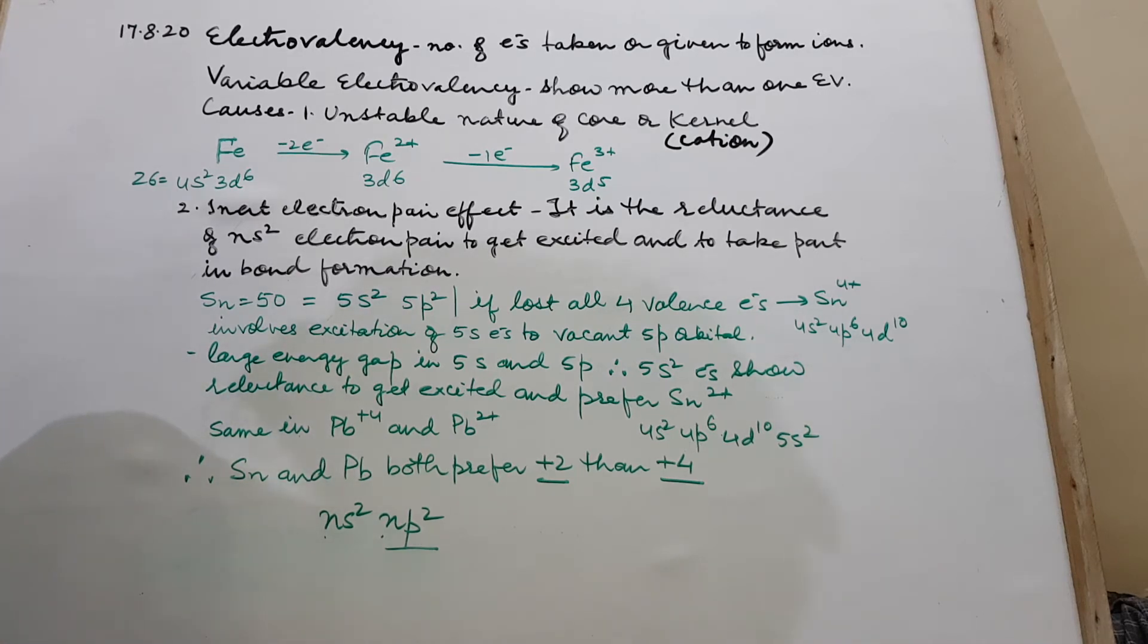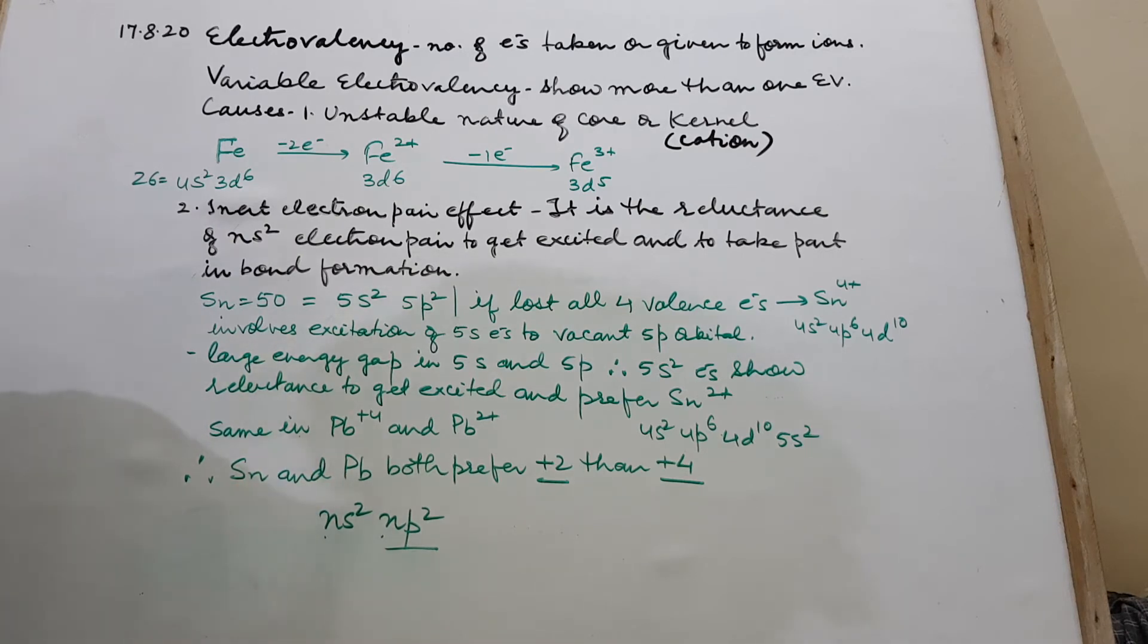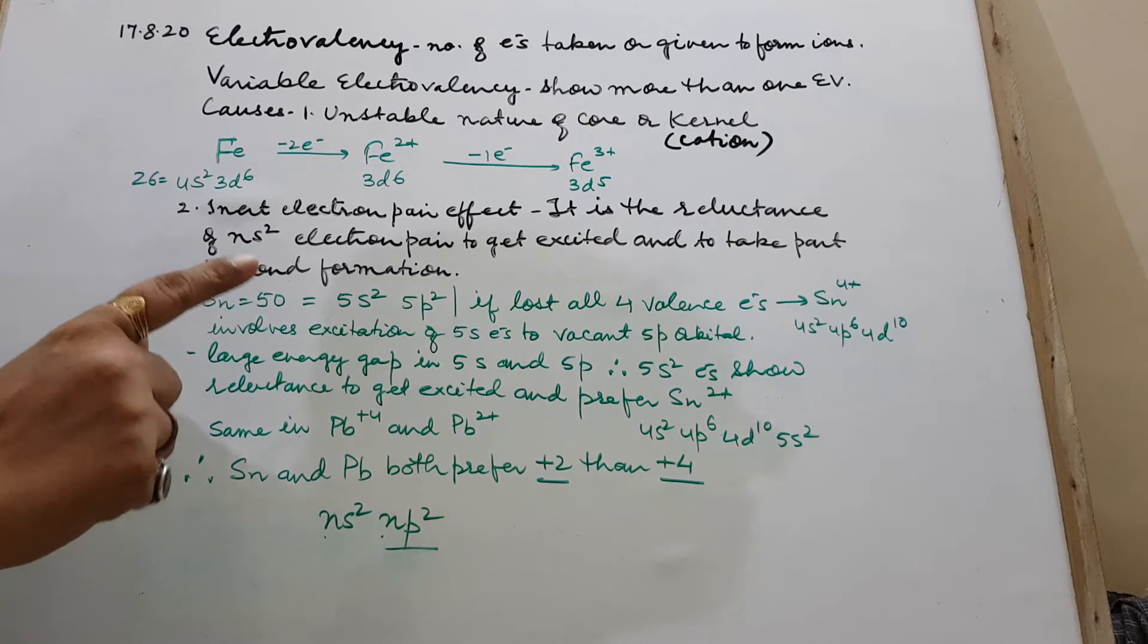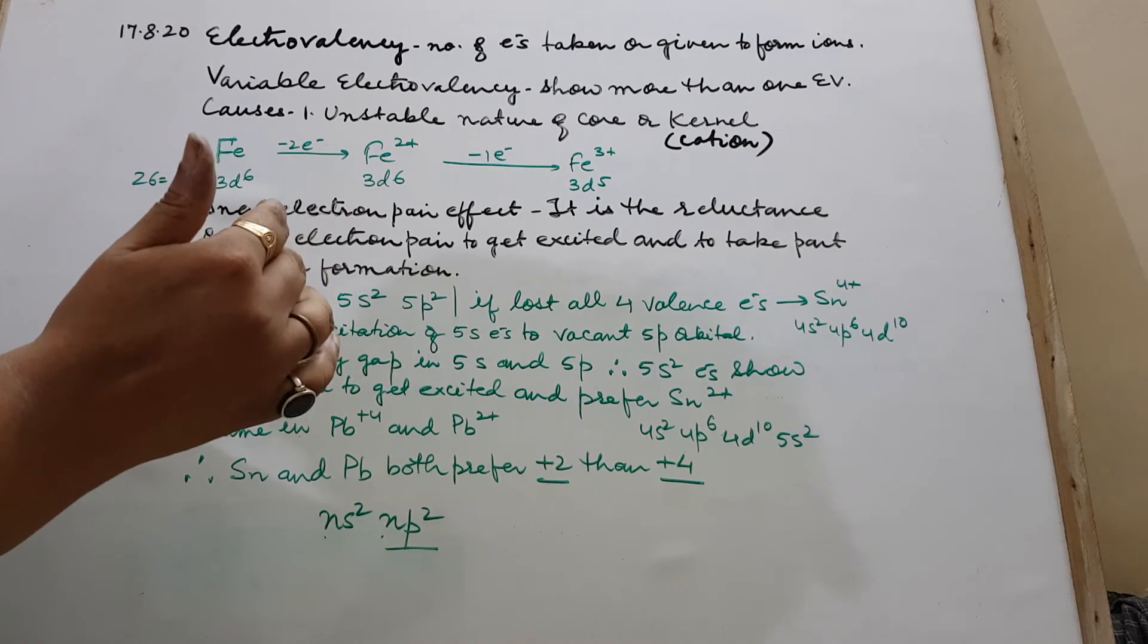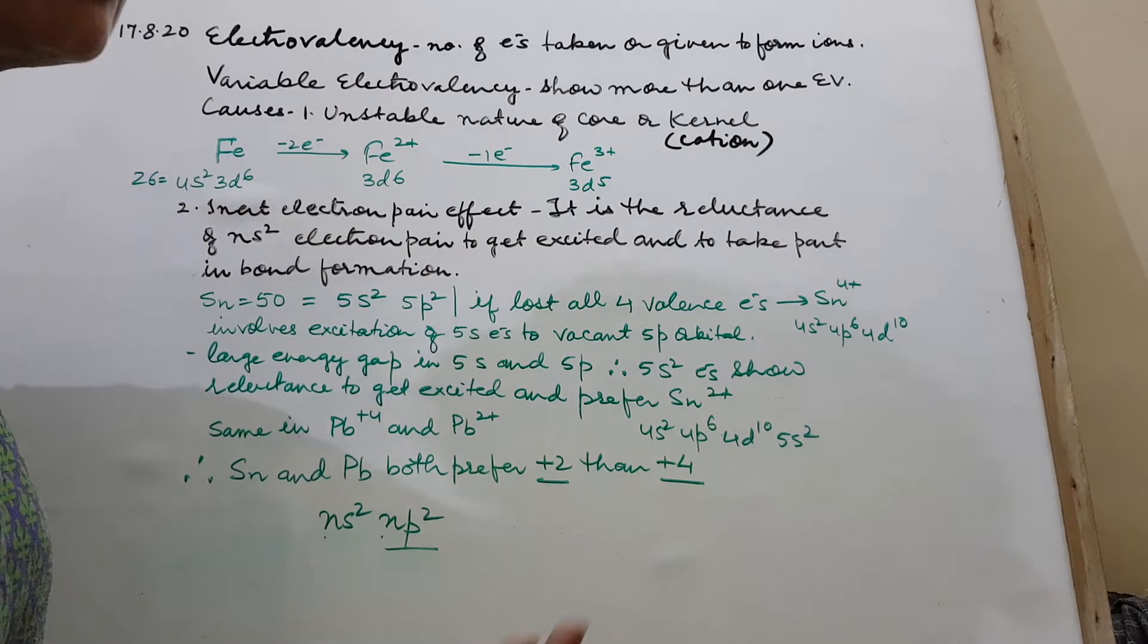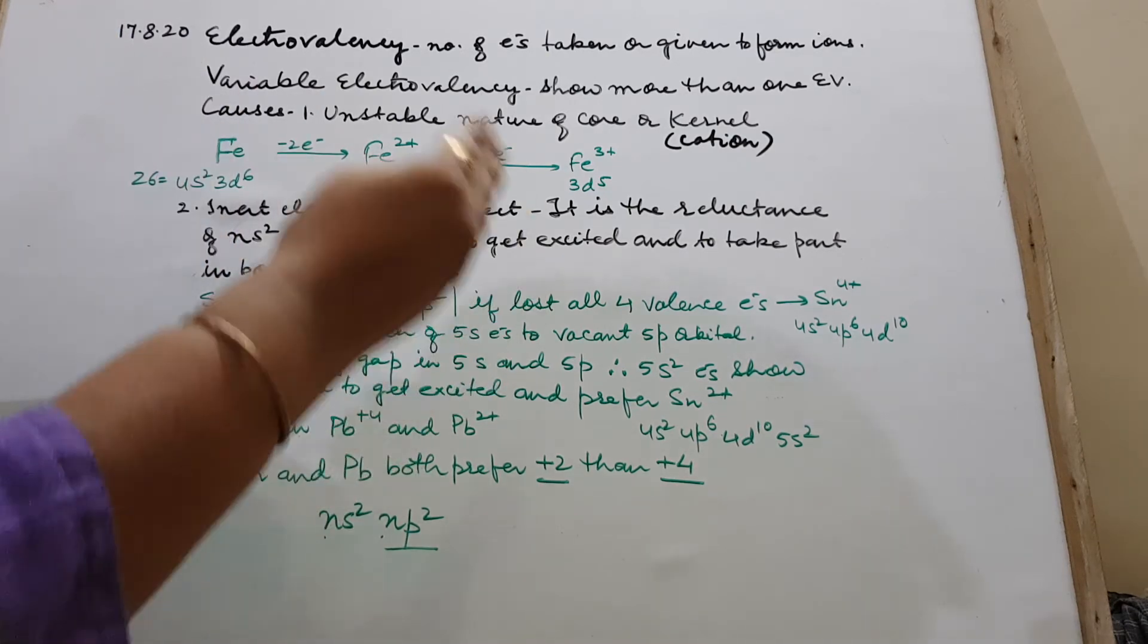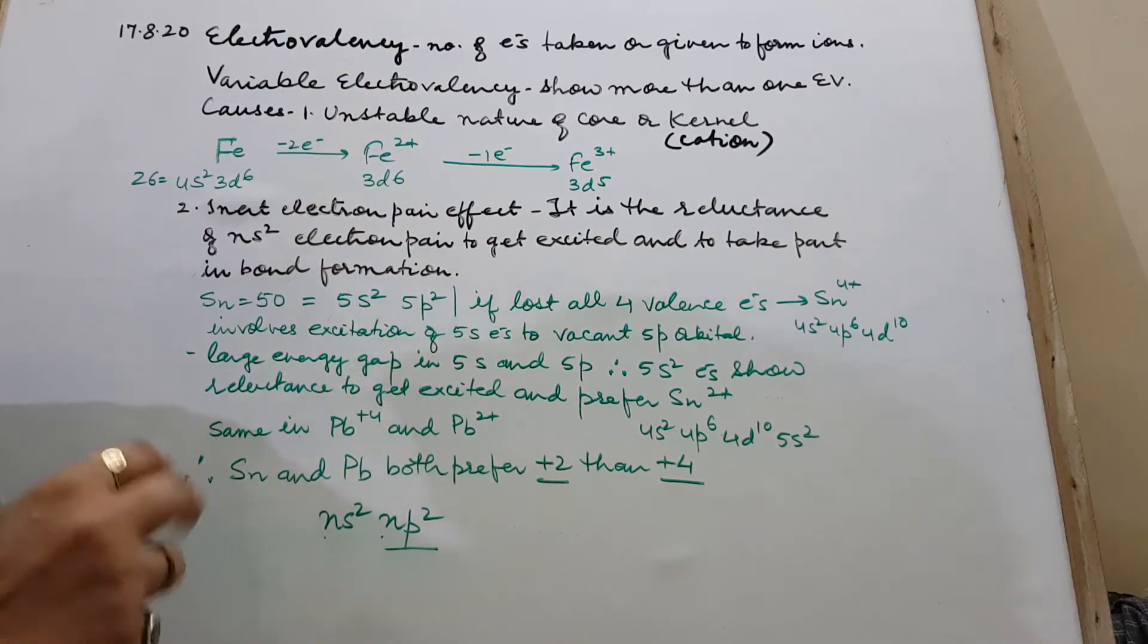They don't want to go to higher shell and do not take part in bond formation. That's why if I ask you, what is the electrovalency shown by lead, you say 2. If I ask for the formula of lead chloride, you will say PbCl2 because in your mind you have the valency of lead as 2. But then you also say it also forms PbCl4 because it shows valency plus 4 also.